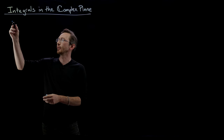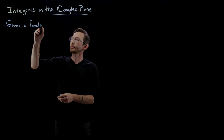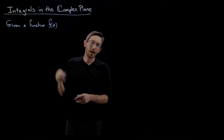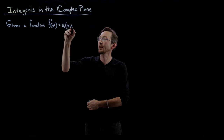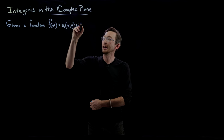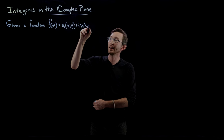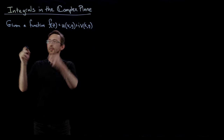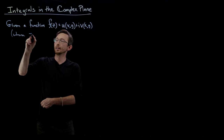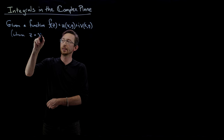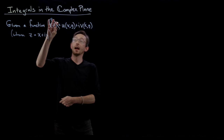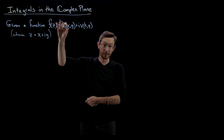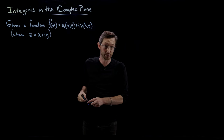Specifically, given a function f(z), we're going to break this up into its real and imaginary parts. So f(z) has a real part u(x,y) plus i times v(x,y), where z = x + iy. x is the real part and y is the imaginary part of my complex variable z. My function f has a real part u and an imaginary part v, both of which are functions of x and y.